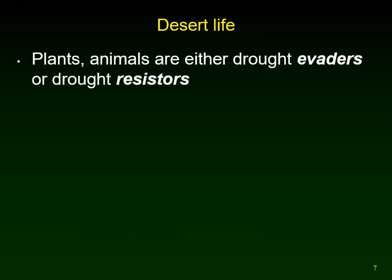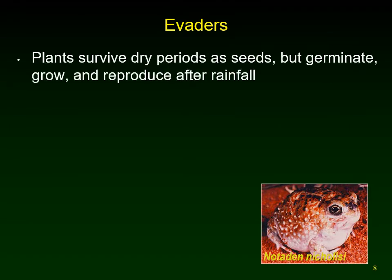When looking at organisms in the desert, we can classify them by how they deal with drought — as either evaders or resistors. An example of an evader is a plant that survives drought as a seed. During the wet season they germinate, grow, and reproduce; when a thunderstorm comes the desert blooms, then plants produce lots of seeds that can sit in the soil for years waiting for the next big rainstorm.